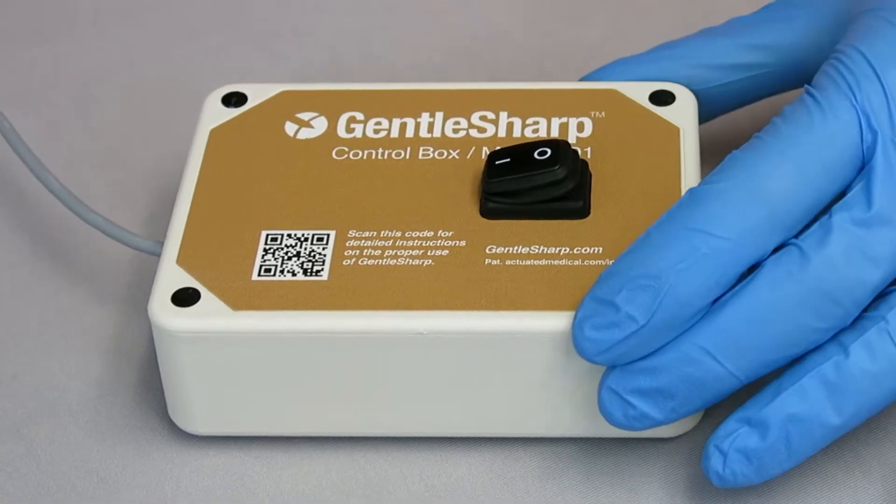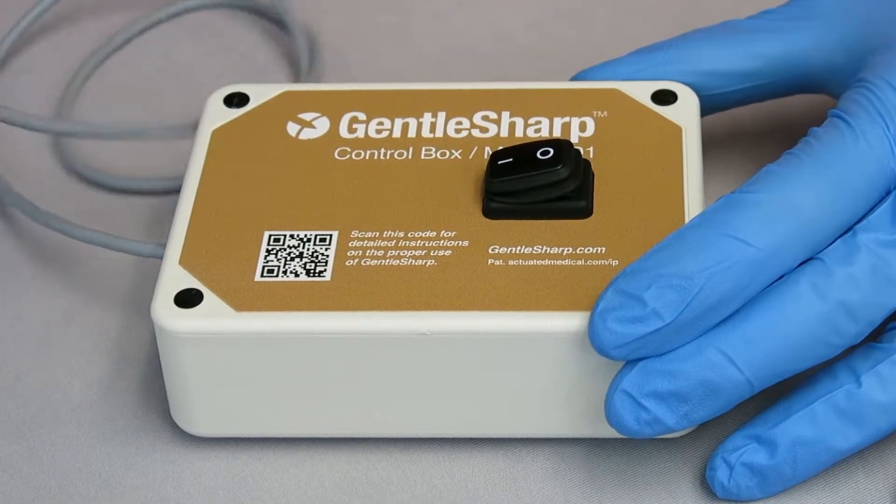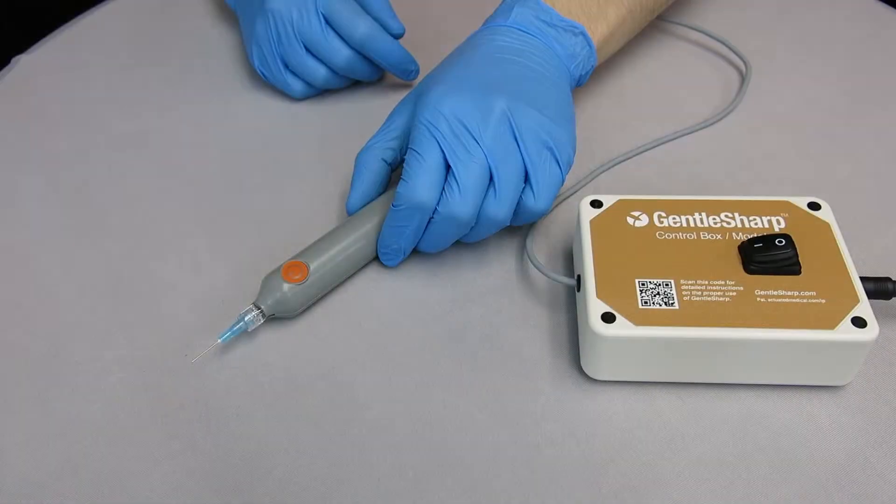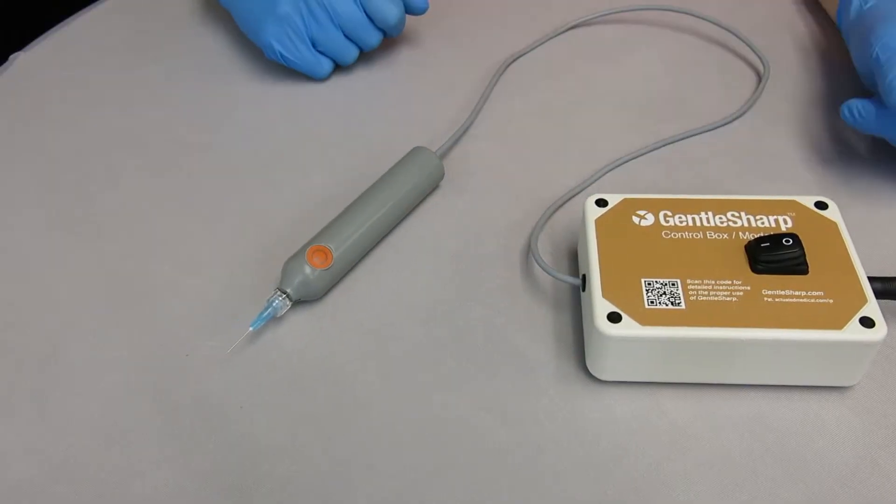To reduce the risk of the control box or handpiece falling, place the GentleSharp control box and handpiece on a level surface. Store the handpiece before and after each use to reduce the risk of the device falling off the surface.